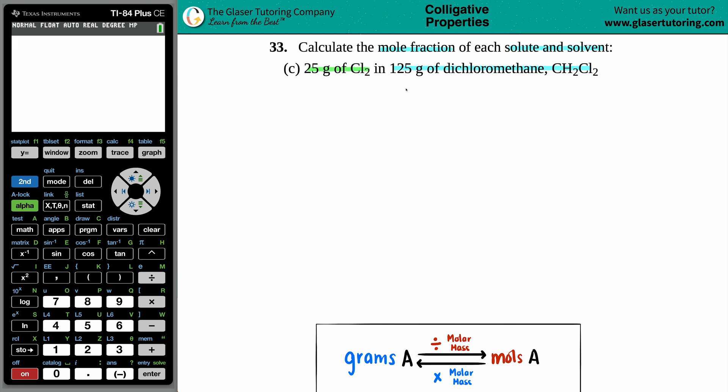For this, we just have to find the mole fraction of the solute and the solvent. I have two compounds here. One is technically a molecule, just Cl2, but we have a covalent compound here, CH2Cl2. Which one is the solute and which one is the solvent? It's good practice to just identify which one is which.